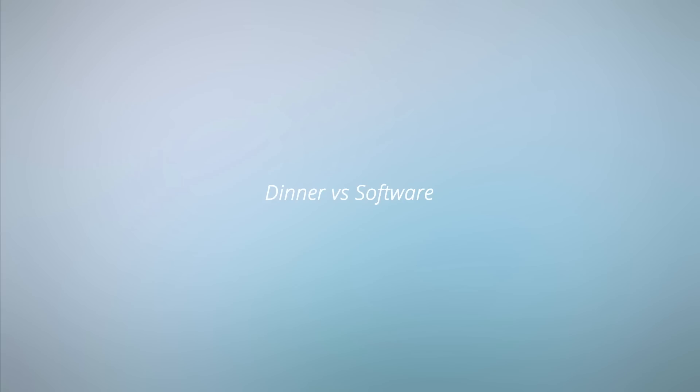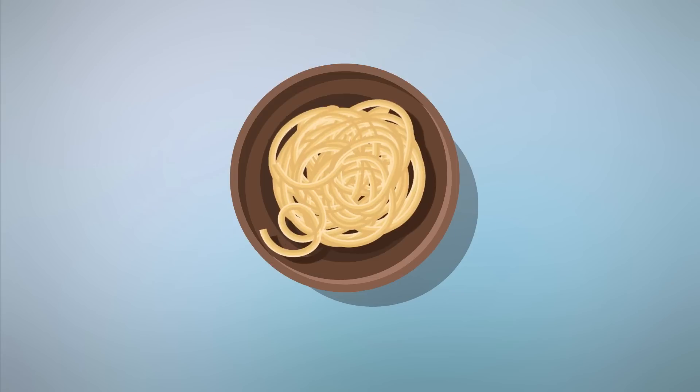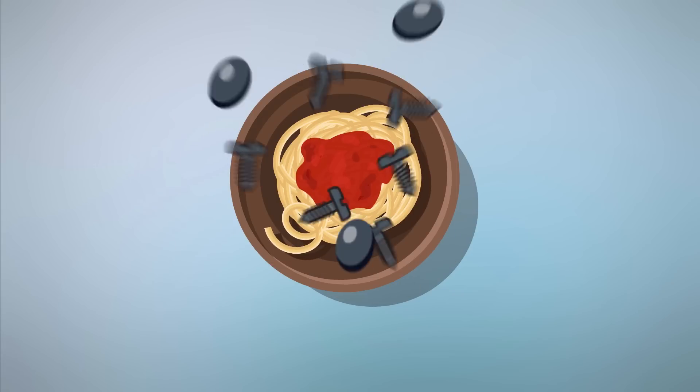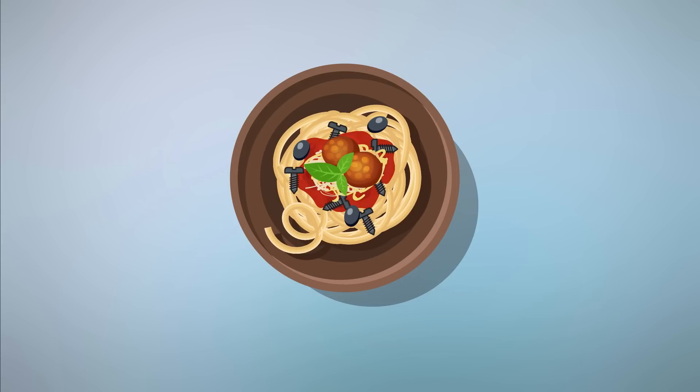Imagine if we made dinner the same way we make software. Spaghetti is on the menu, so let's do our development stage first. Noodles, sauce, a few olives, cheese, and meatballs on top. Great, we're about ready to ship, but let's not forget our testing stage.